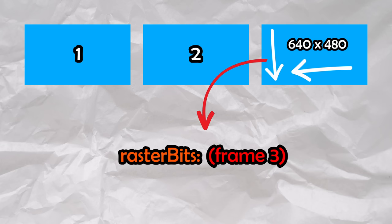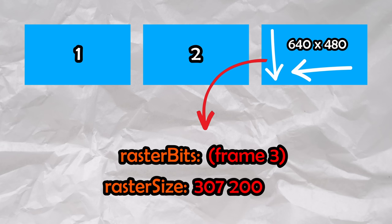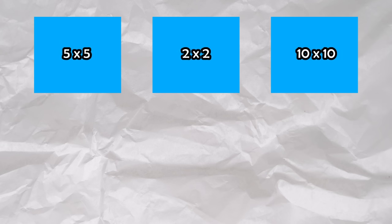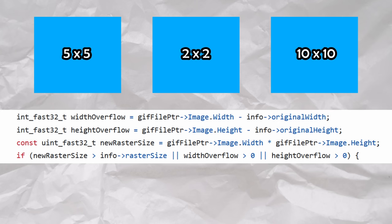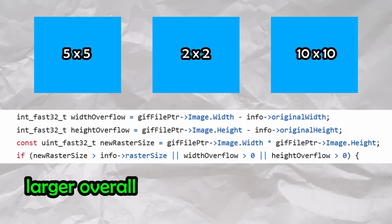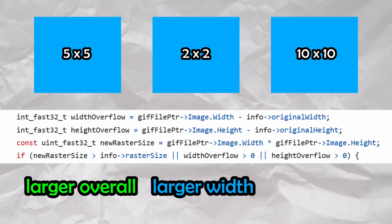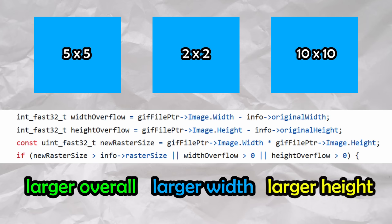If we had a frame size of 640 by 480, the RasterBits buffer would allocate 307,200 bytes for itself. When we get into the case of different frame sizes, the buffer may need to be reallocated. As we can see in the source code, we will need to reallocate the buffer if the new frame size is larger overall, if the width is larger, or if the height is larger.